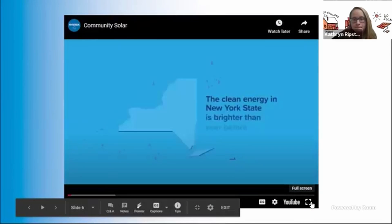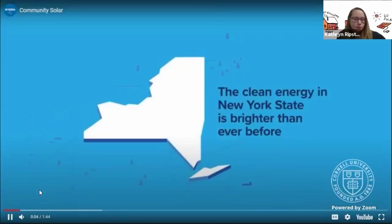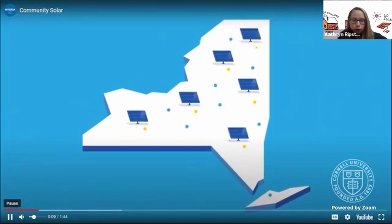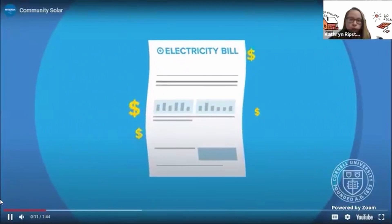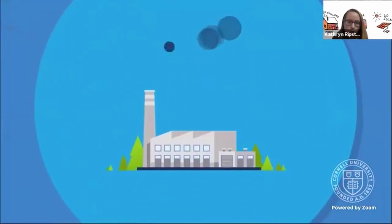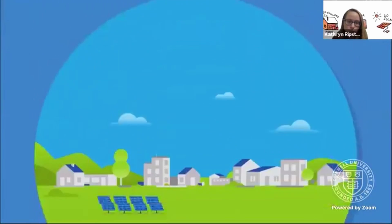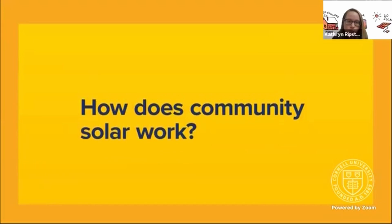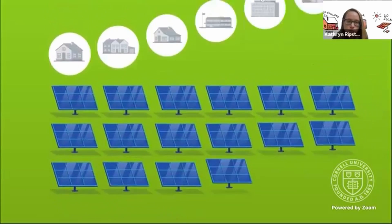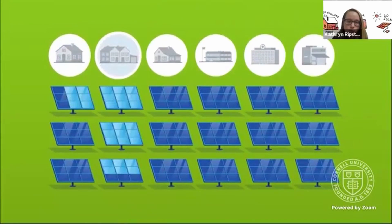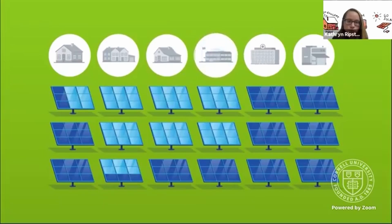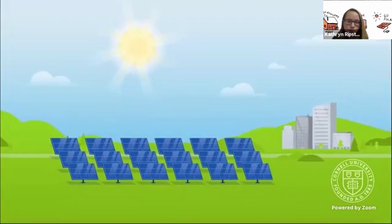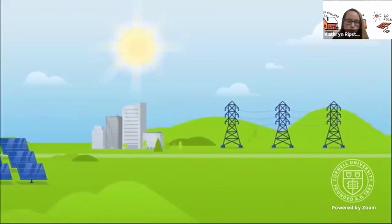The future of clean energy in New York state is brighter than ever before. Communities across New York are now getting access to solar energy through community solar. They're saving on electricity bills, reducing their carbon footprints, and stimulating their local economy. How does community solar work? The process is actually quite simple. Solar panels are installed at a site in your community. Depending on the community solar project size, dozens or even hundreds of community members can subscribe to a single project. Clean energy generated from the site is then fed into the local power grid.